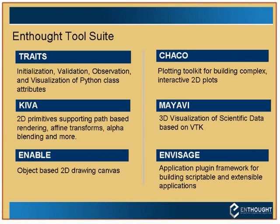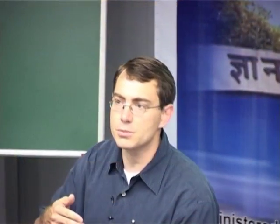Kiva is a bit like using OpenGL but for the 2D world, supporting affine transforms, alpha blending, and things like that. Sitting on top of that is Enable, where you put actual objects down on a canvas — boxes and circles with properties like radius and size that you can move around and click on. On top of that is Chaco, a plotting library for interactive plotting.